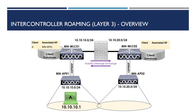Next, we'll look at inter-controller roaming layer three. An inter-controller roam occurs when a client roams between access points associated to different controllers. The key difference for the roam to be classed as layer three is that both controllers will be on separate subnets. In our topology, AP01 is associated to WLC01 and AP02 is associated to WLC02. Both controllers are on different subnets: WLC01 is on 10.10.10.0/24 and WLC02 is on 10.10.20.0/24.